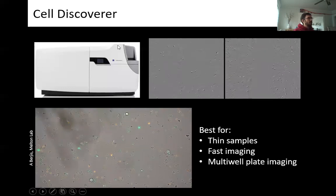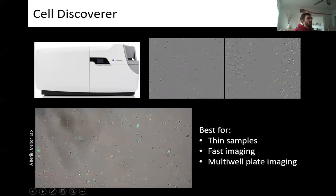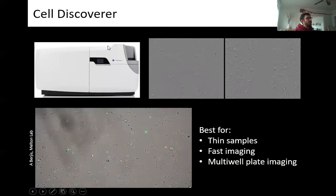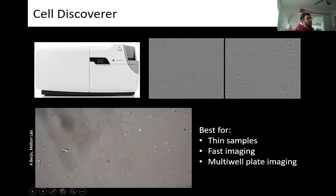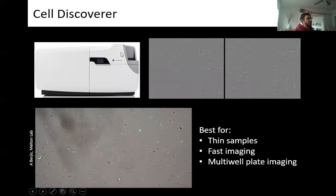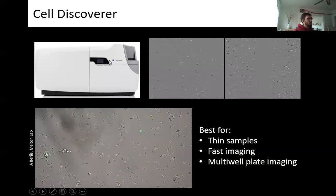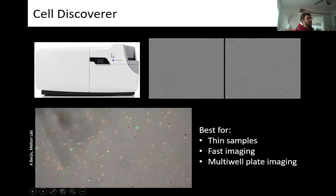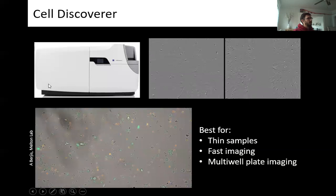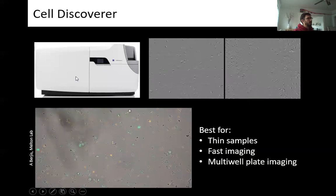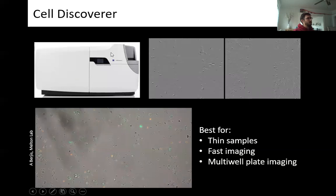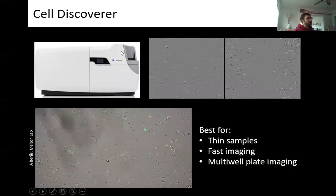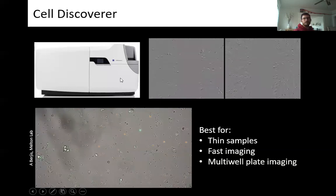Inside the Cell Discoverer, you put your plate or sample in, it's taken into a fully environmentally controlled chamber at the back — heated, with humidified air supplied by a water bottle, and CO2 mixed in over the sample as well. Very easy to keep samples nice and happy in here.